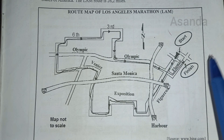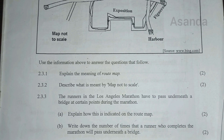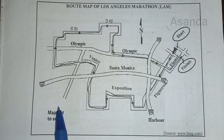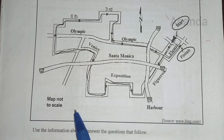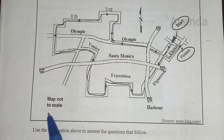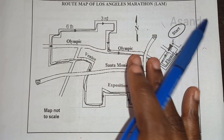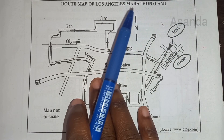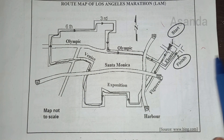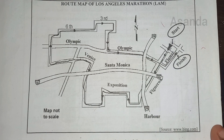Question 2.3.2: Describe what is meant by 'map not to scale.' We don't have a scale on this map — we know this because it says 'map not to scale.' They did not draw this using measurements, and therefore you cannot correlate the drawing with real-life measurements. This map is not drawn to scale; you cannot use a ruler to convert it to real life.